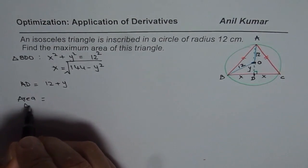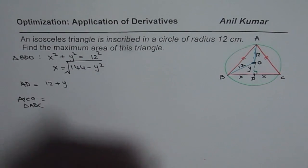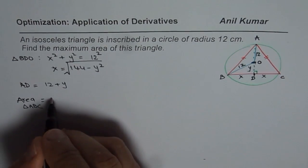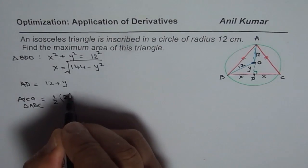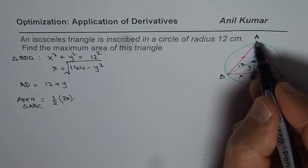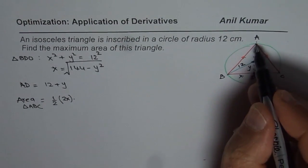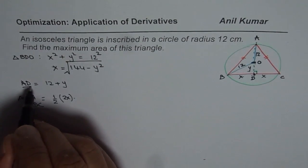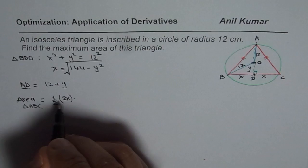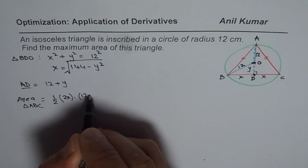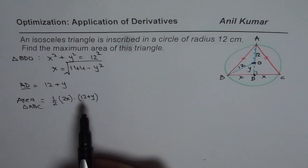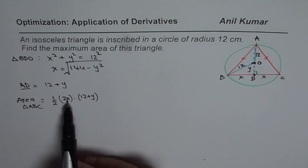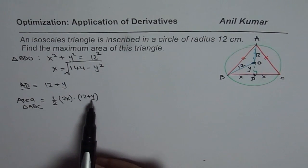Area of triangle ABC equals one-half times base times height. The base is 2X and the height is AD, which is 12 plus Y. So area equals half times 2X times (12 + Y).